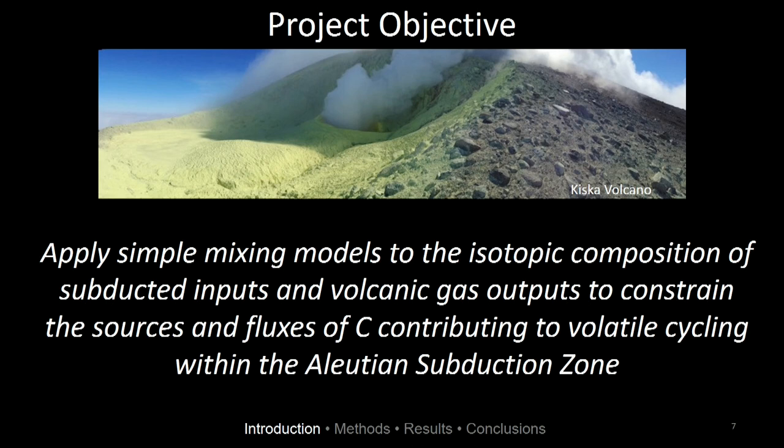So we can use these isotopic compositions to try to investigate volatile cycling. The goal of our work was to do this within the Aleutian arc. We wanted to use new constraints on the isotopic composition of subducted inputs and volcanic outputs, and a simple mixing model to really characterize volatile cycling within the subduction zone.